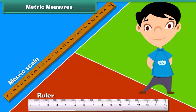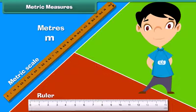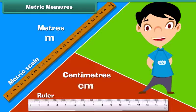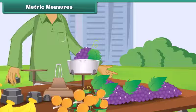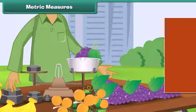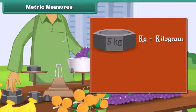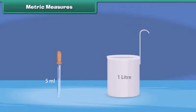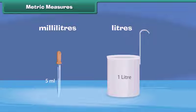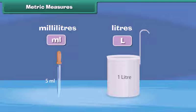Metric measures: Meter is represented by M, and centimeter by CM. The weight of an object is measured in grams and kilograms — the symbol KG represents kilogram, while G represents gram. Capacity is measured in liters and milliliters — L represents liter and ML represents milliliter.